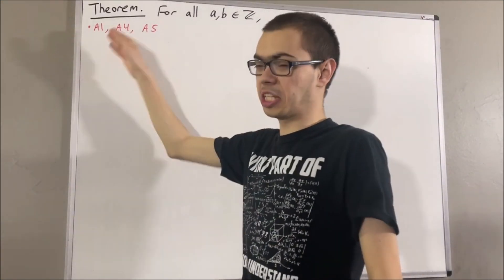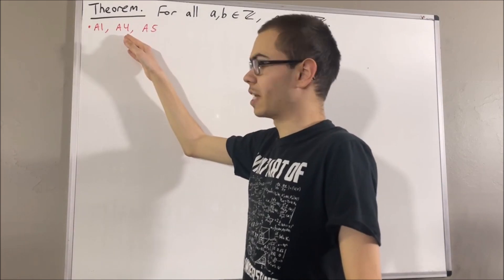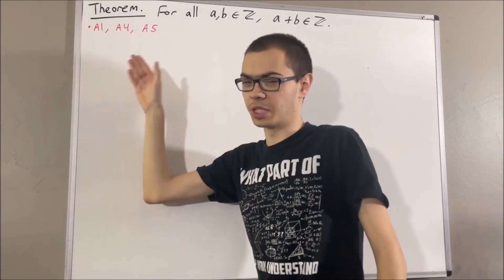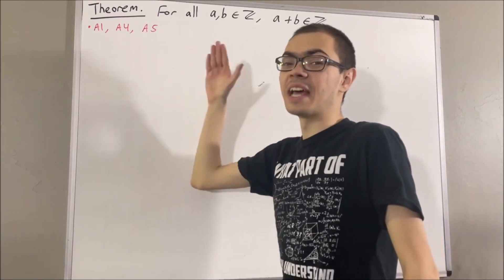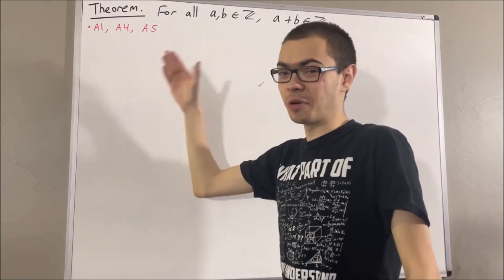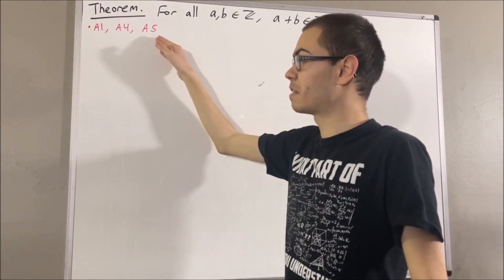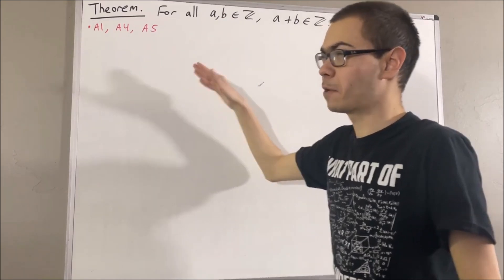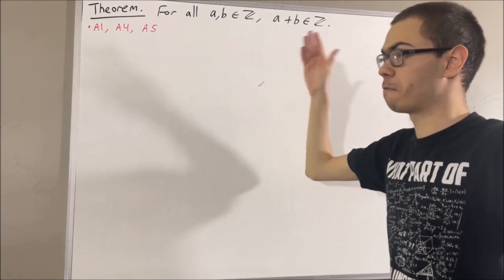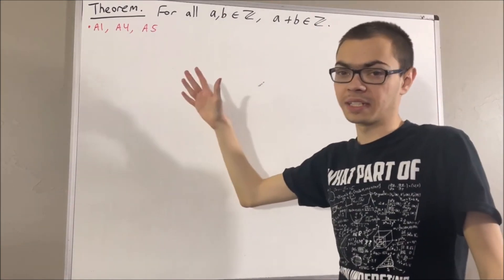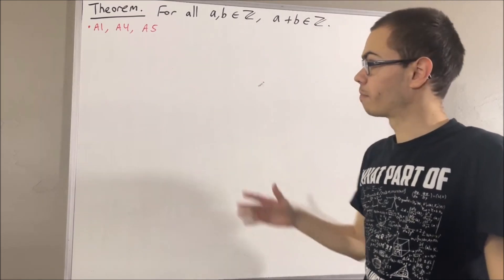Axiom 1 is just the commutative law. Axiom 4 tells us about the real number zero, and it says: for all real numbers x, x plus zero is equal to x. Axiom 5 tells us that every real number has a negative, and we have: for all real numbers x, x plus the negative of x is equal to zero.